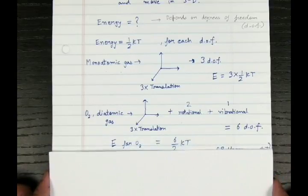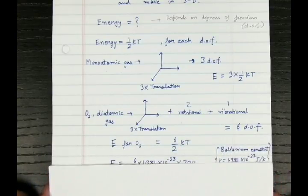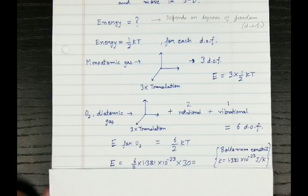So that means the energy will be six times one by two, that is six by two KT. And here K is Boltzmann's constant which has a constant value of 1.381 times 10 raised to the power minus 23 joules per Kelvin.